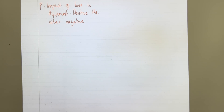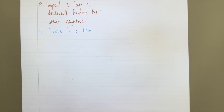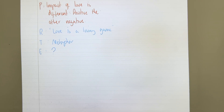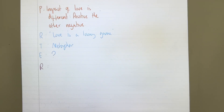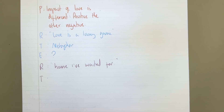Now for poem number one, the quote is 'love is a losing game.' The technique is a metaphor — I'll explain the effect as I write. Then I move on to the second poem: 'you are the home I've waited for.' The writer has also used a metaphor, and again I'll explain that effect later. Then I go back to poem one and zoom in.